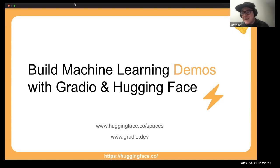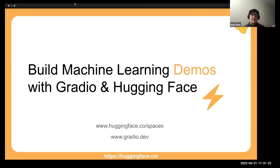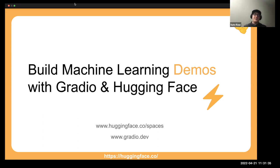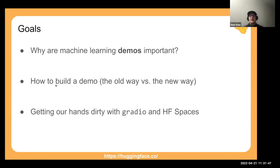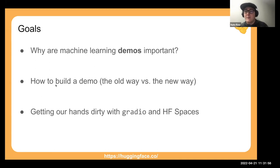Louis covered two of the three biggest pillars of machine learning: models and datasets. Now we're going to talk about demos — what you do once you've trained your model. You've got this shiny new model — what can you do with it? The answer is demo it. We'll talk about why machine learning demos are important, how to build one, and then we'll get our hands dirty with some live programming using the Gradio library, and hopefully get to using Hugging Face Spaces.